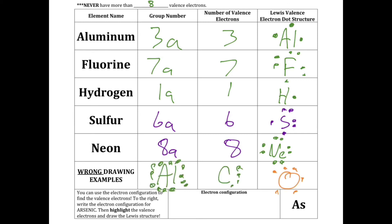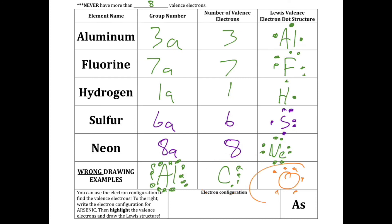Here are some examples of how to incorrectly do this. The first example has 13 electrons — again, you can never have more than 8. The second example shows dots not going in the correct order. You start with one dot and go 90 degrees until you've got all the valence electrons. This third one is also not in the correct order.